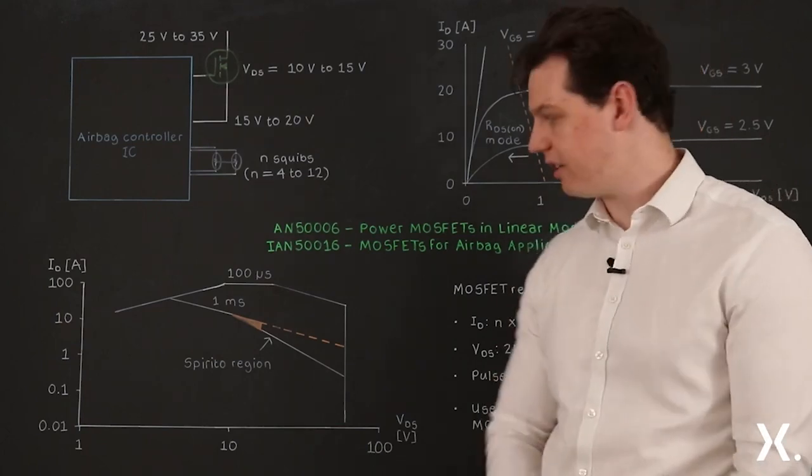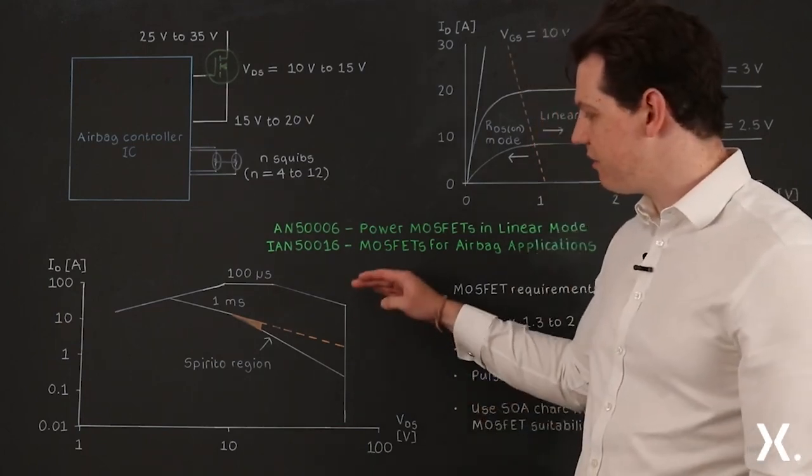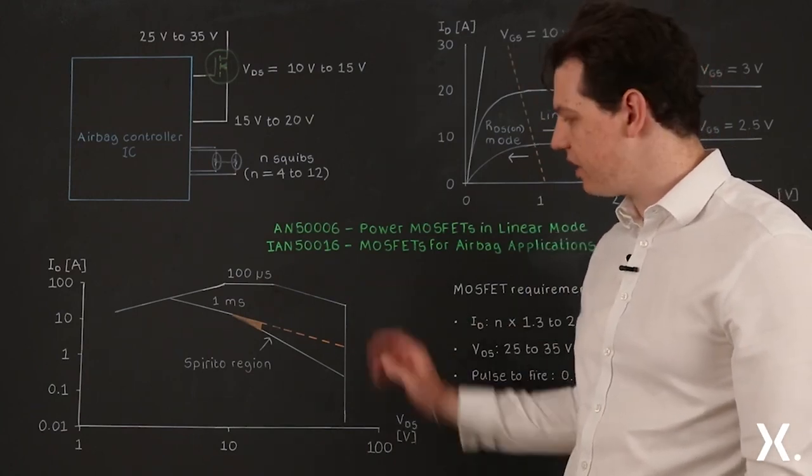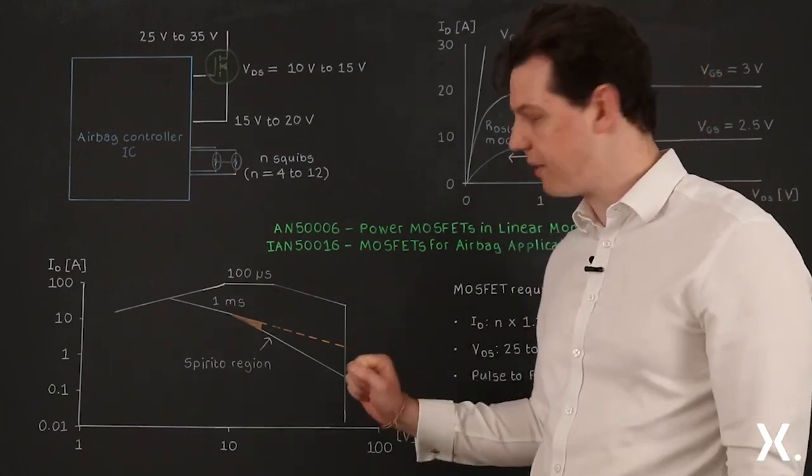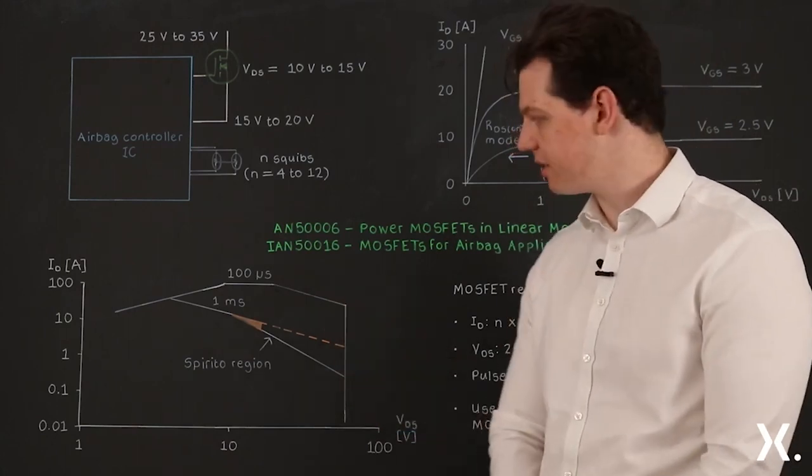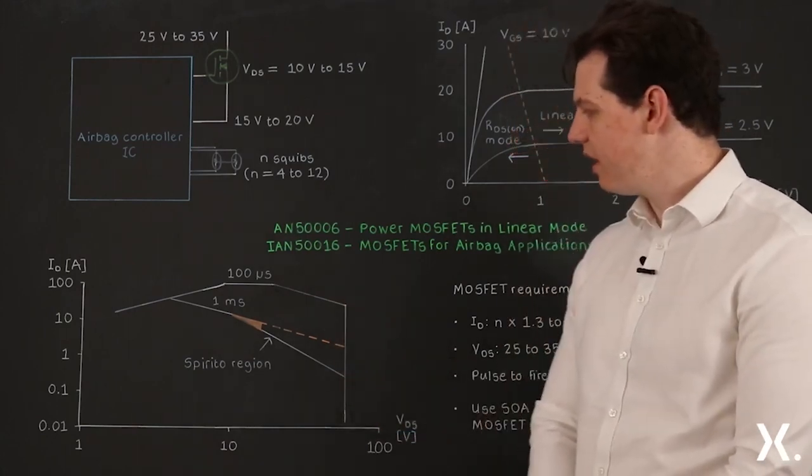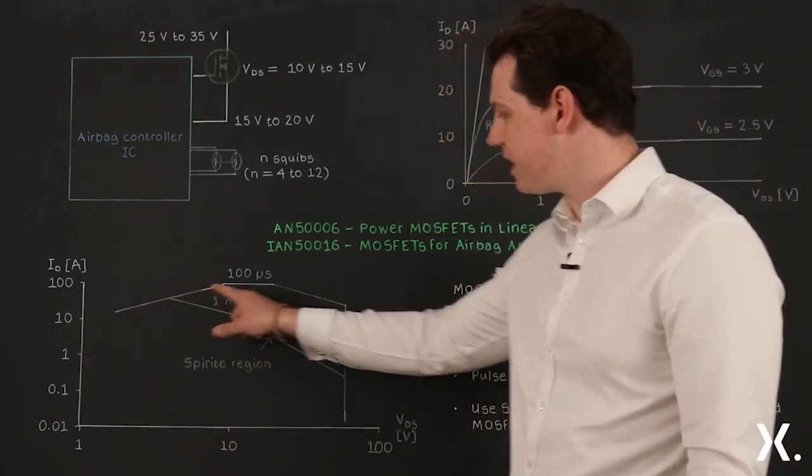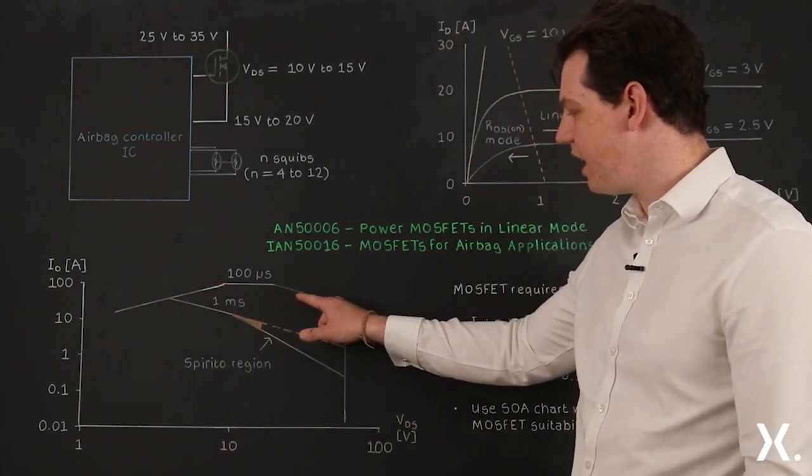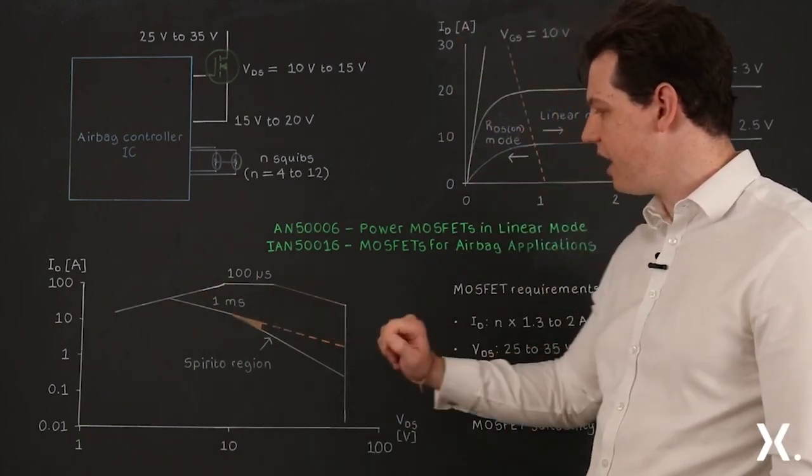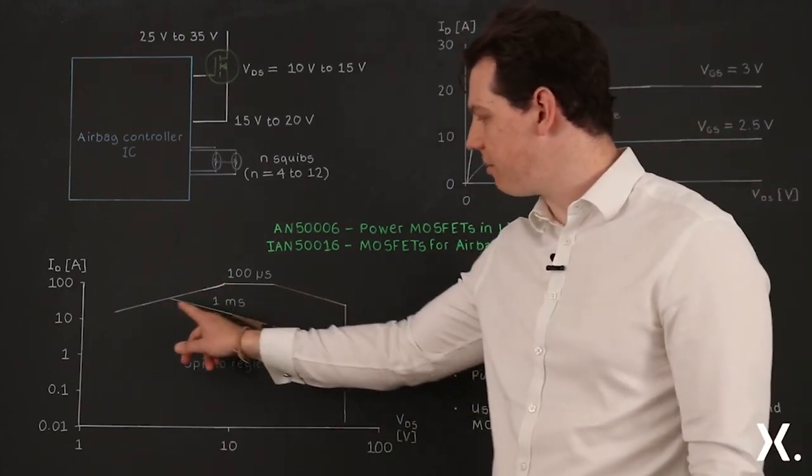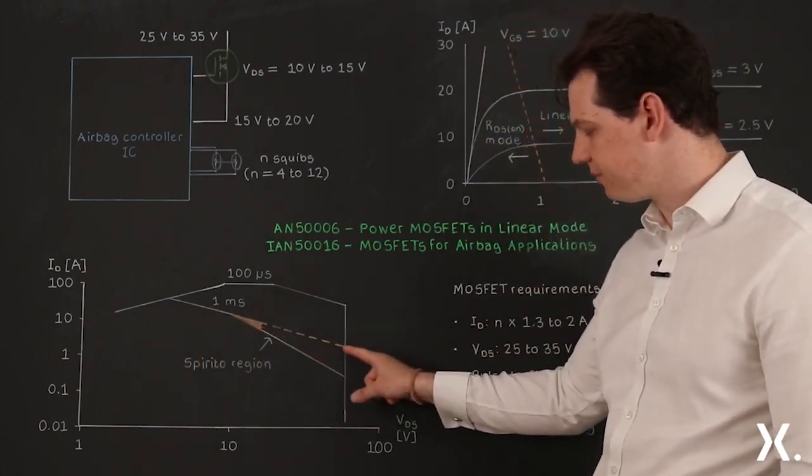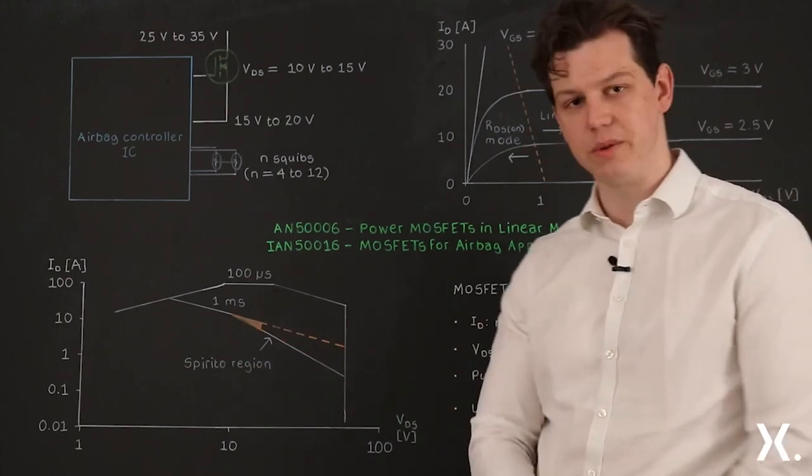Also plotted on the chart you can see different plots for different pulse lengths with the safe operating area or SOA getting smaller for longer pulses of current. For short pulse lengths the MOSFET is able to dissipate all the heat generated but for longer pulses you can see this deviation away from the constant power line and this is due to an effect of heating known as the Spirito effect.